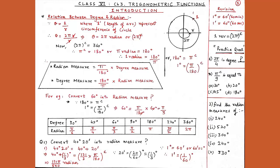Theta will always come in radian. Since theta equals 2π radian and one complete revolution equals 360 degrees, by unitary method, 2π radian equals 360 degrees, so π radian equals 180 degrees.